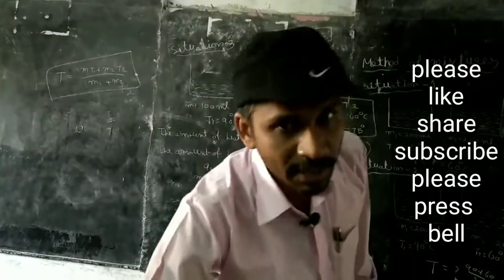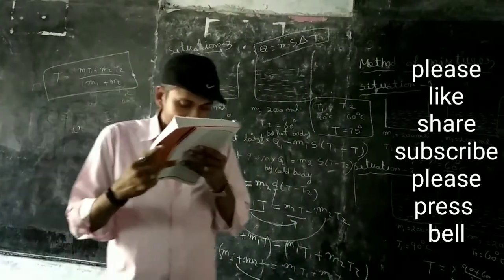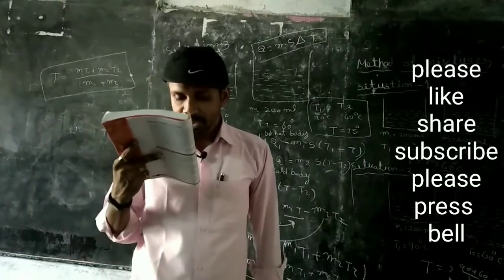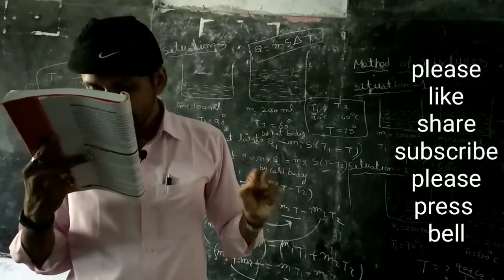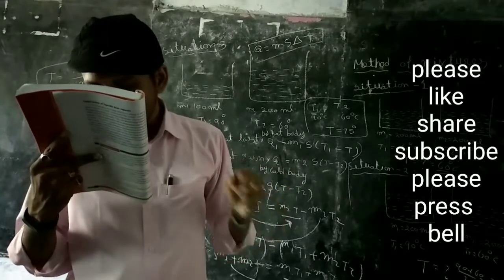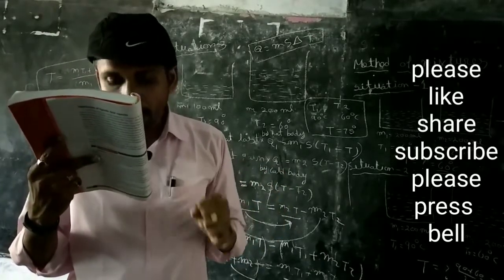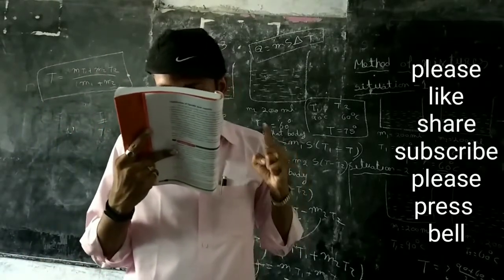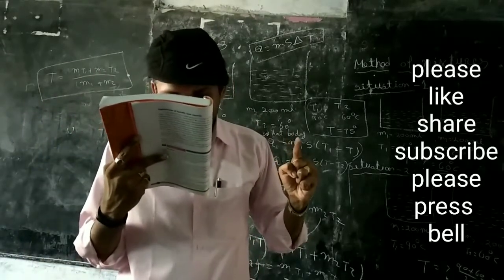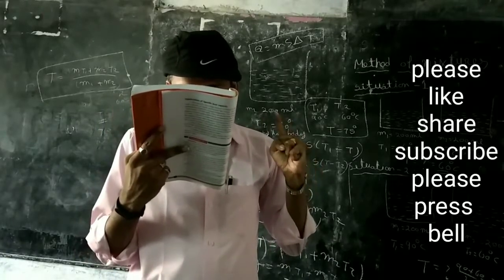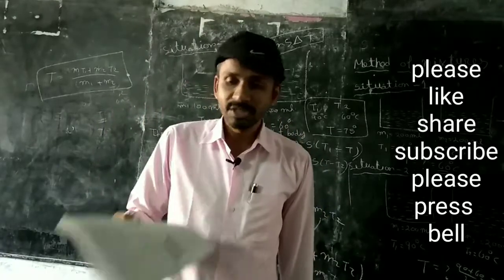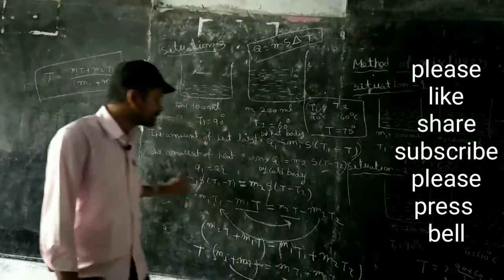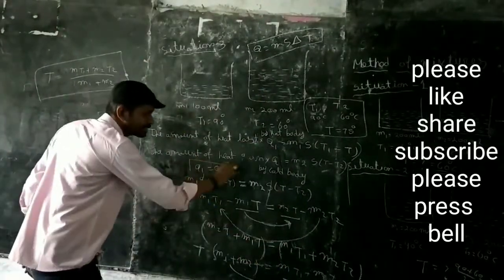The principle of the method of mixtures states: when two or more bodies at different temperatures are brought into thermal contact, the net heat lost by the hot body is equal to the net heat gained by the cold body. That is, Q1 equals Q2.